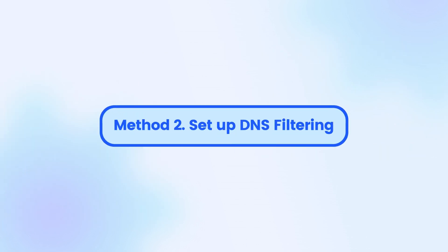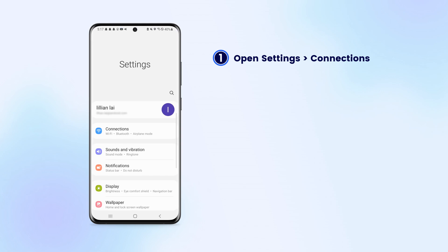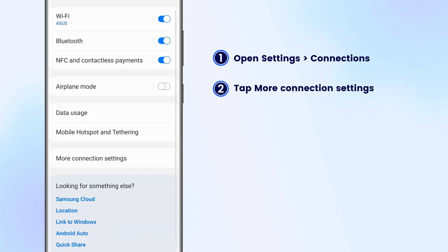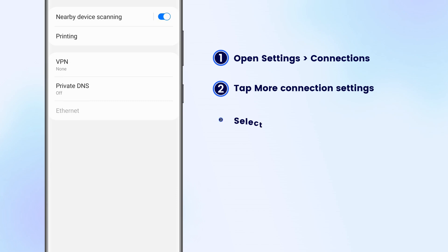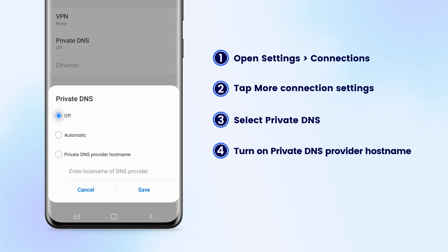Method 2: Set up DNS filtering. Launch the Settings app and then go to Connections. Tap more connection settings, then press private DNS. Select private DNS provider hostname.